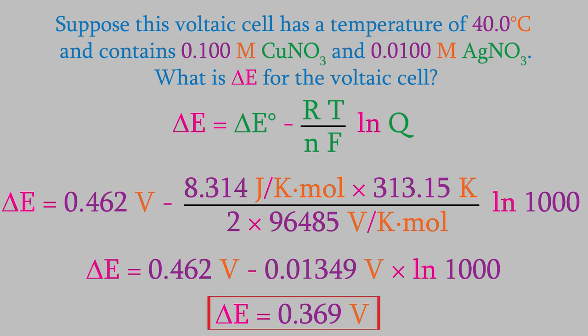Notice that this is significantly different from the result we were getting when we used standard temperature and concentration, which was 0.462 volts. So the Nernst equation is giving us much more accurate results.